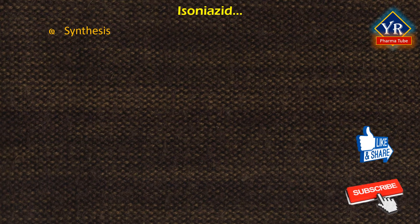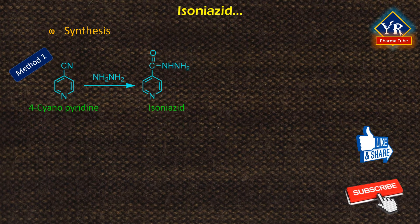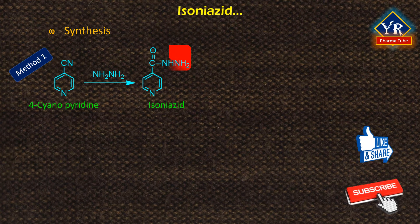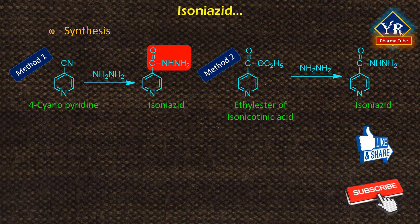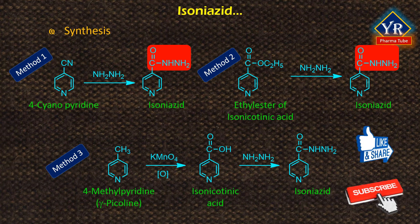Synthesis of isoniazid. Isoniazid is synthesized by three methods. In the first method, isoniazid is synthesized by reacting 4-cyanopyridine and hydrazine hydrate. In the second method, ethyl ester of isonicotinic acid reacts with hydrazine to form isoniazid. In the third method, isoniazid is synthesized from 4-methylpicoline. The 4-methylpicoline undergoes oxidation with potassium permanganate to form isonicotinic acid, which upon heating with anhydrous hydrazine condenses to yield the desired isoniazid.